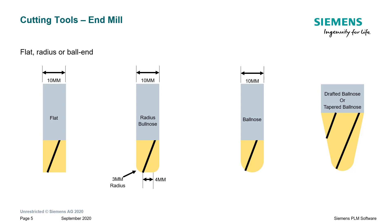The third picture is what we call a ball nose end mill. As the name describes, the end of the tool is spherical. Step overs of a flat diameter would not apply here at all. Typically, when we calculate step overs using a ball nose end mill, we're talking about a scallop height. When we get into the three axis section of our lesson plan, we'll explain what a scallop height is.